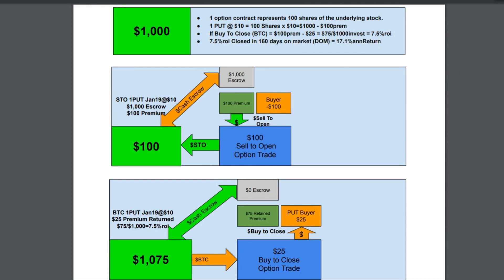I'm not receiving 17.1%, but I would be receiving 7.5% in less than half of a year. Here's how that transaction looks. Sold to open: one put, January 19th, at $10. Escrowed $1,000 — so my $1,000 has now gone into escrow. $100 of premium has come from the buyer of the put, so it has flowed through this option contract back into my account. My account now only shows $100 because the $1,000 has been escrowed. When I initiate a transaction to buy to close the contract, we buy to close one put, January 19th, at $10. It cost me $25 in premium — return equals $75 — and my $1,000 back into my account is a 7.5% return on my investment.